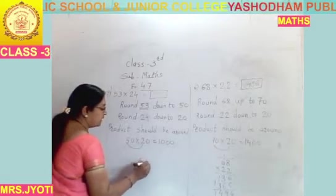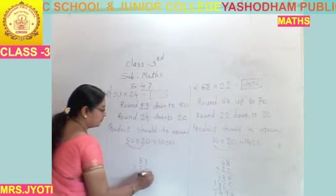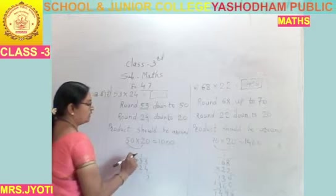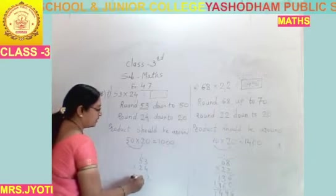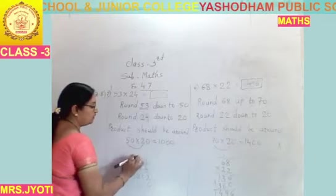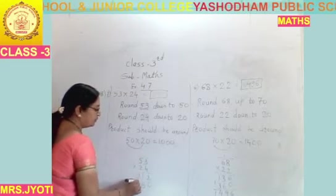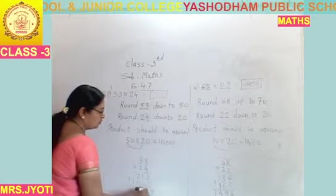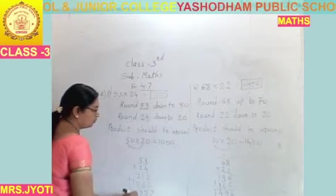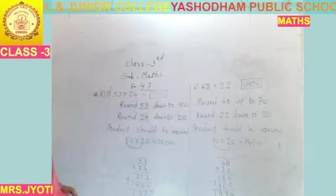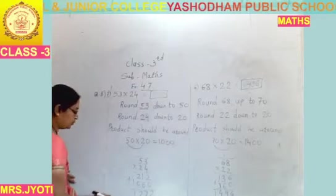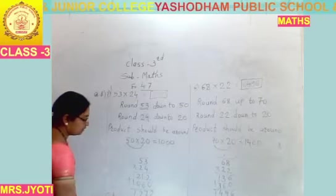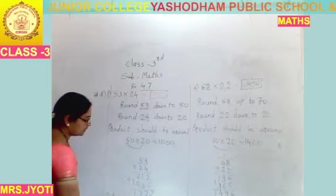So 53 multiplied by 24. 4 threes are 12, carry 1. 4 fives are 20, 21. 0. 3 twos are 6 and 5 twos are 10. Then addition: the answer is 1272.